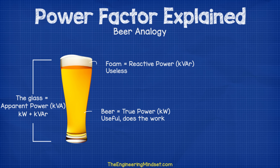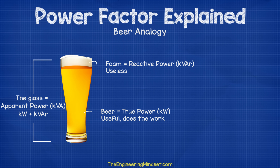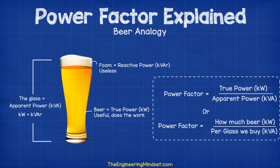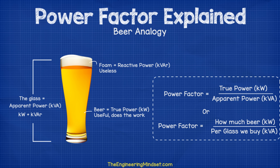The combination of our KW, our kilowatts, and our KVAR, the kilovolt amps reactive, is our apparent power, or our KVA, meaning the kilovolt amps. Power factor is therefore the ratio of useful power, or true power, in kilowatts divided by what we're charged for in KVA, the kilovolt amps. So it's telling us how much value for money we're getting for the power we consume.